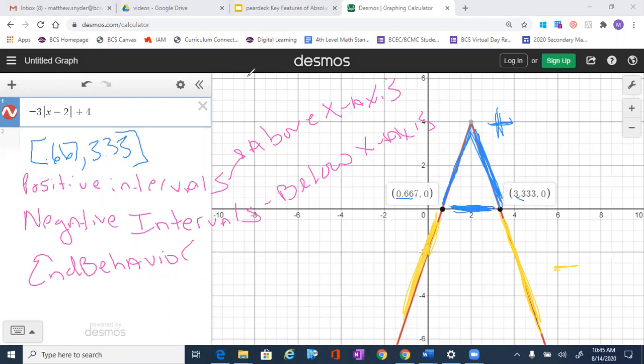Then I'm going to go negative intervals. And negative intervals are anything that's below the x-axis. Well, that happens way out here. Remember, I'm going to write this as negative infinity, that's positive infinity. That happens way out here, and then it stops right there. And then once again, it does the exact same thing. It starts here and it goes way out in that direction.